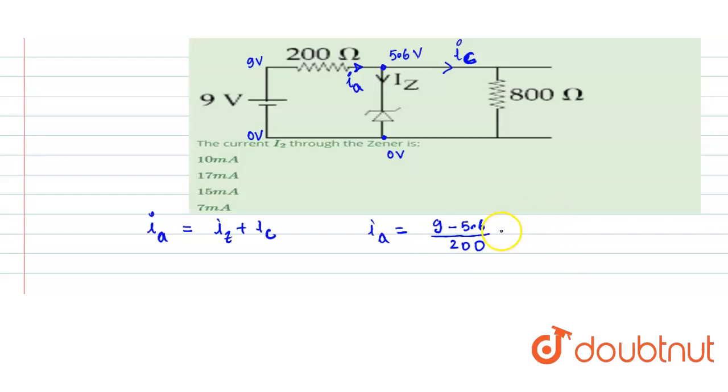That is 9 minus 5.6 divided by 200, which gives us 0.017 ampere or 17 milliampere. So this is the current in the 200 ohm resistance.